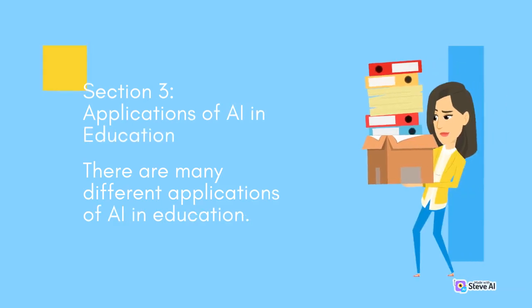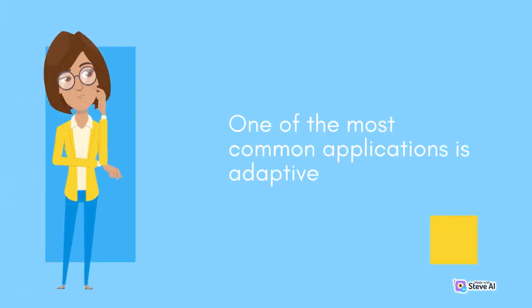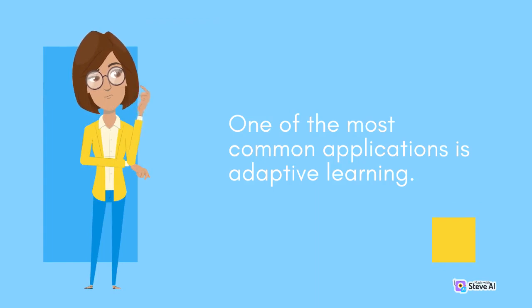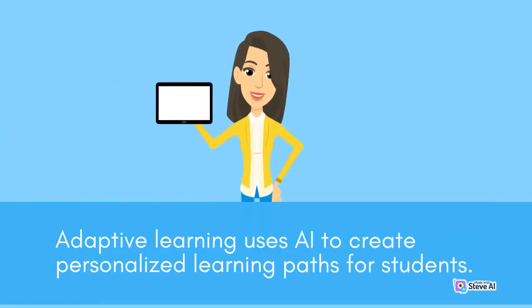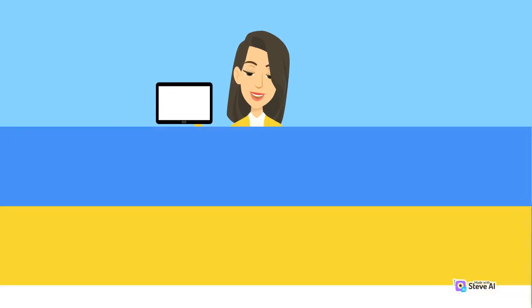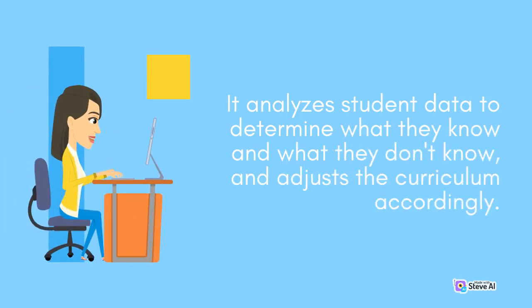Section 3: Applications of AI in Education. There are many different applications of AI in education. One of the most common applications is Adaptive Learning. Adaptive Learning uses AI to create personalized learning paths for students. It analyzes student data to determine what they know and what they don't know, and adjusts the curriculum accordingly.